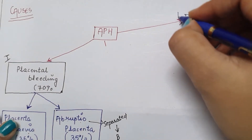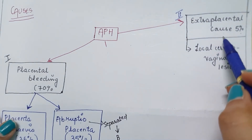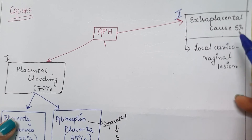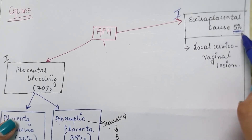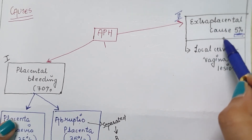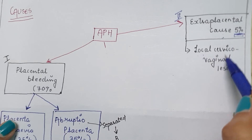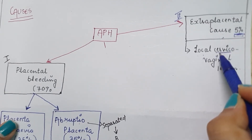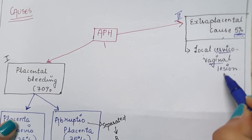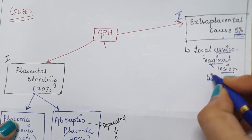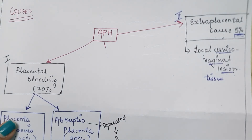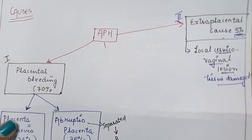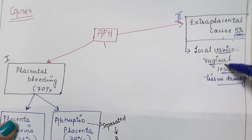Next is the extra-placental cause, meaning the cause is other than the placenta. In 5% of cases, the cause of antepartum hemorrhage is extra-placental. It includes local cervico-vaginal lesions — cervico means cervix, vaginal means vagina — where tissues are damaged due to a wound, tumour, or injury, causing bleeding at the cervix or vagina.